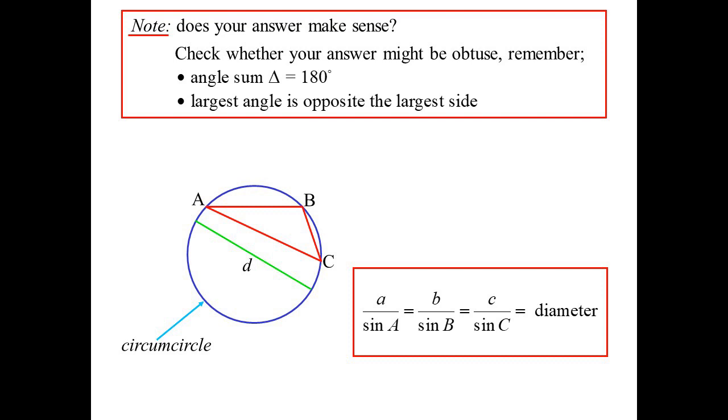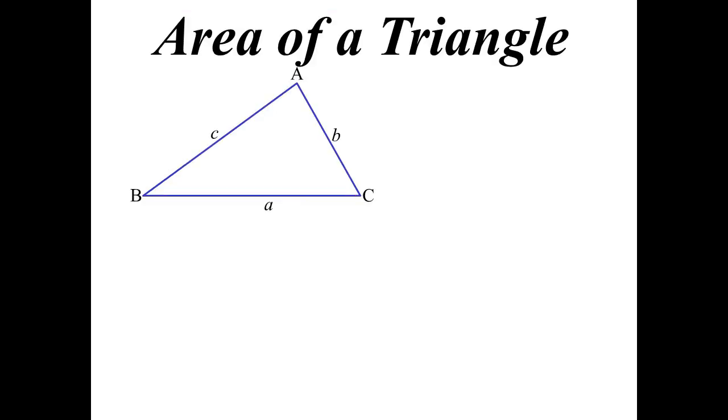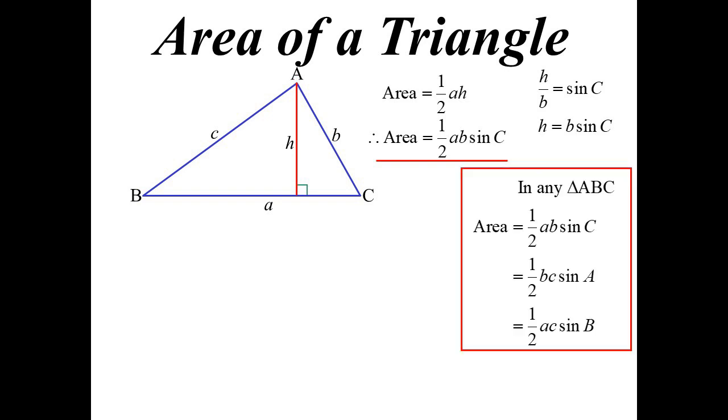Area of a triangle: seeing we're talking about the sine ratio, makes sense to look at this one as well. Well we know the area of a triangle is half base times height, half a times h. Well again I could say h over b is sine C, I could substitute in for h and I come up with this new formula for the area of a triangle: half ab sine C. So I don't actually need to know the perpendicular height. Of course it could be any combination; basically it has to be two sides and the included angle.